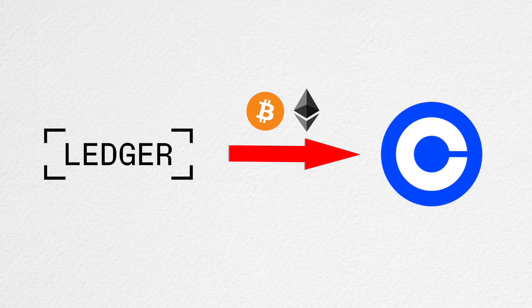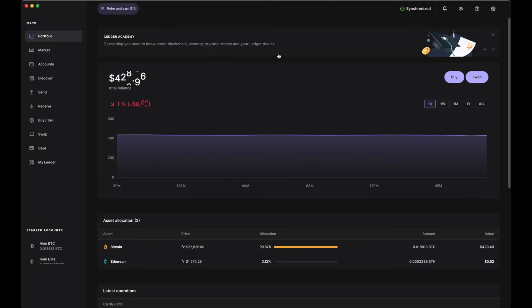Now we'll move on to the Ledger Live app — that's where we are going to transfer the crypto from to the Coinbase account. I'm going to launch the Ledger Live app. I'll connect my Ledger device to the computer using the USB cable provided in the box.